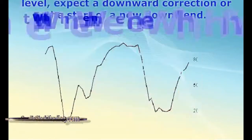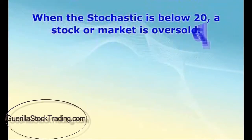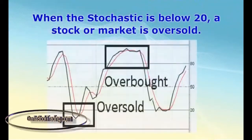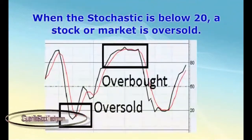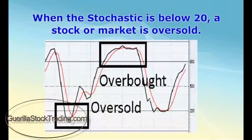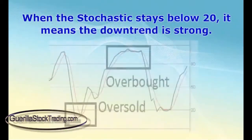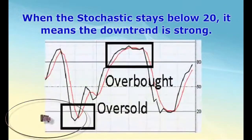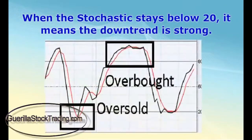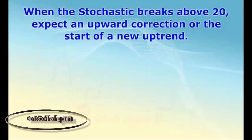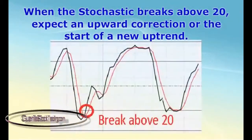When the stochastic is below 20, a stock or market is oversold. When the stochastic stays below 20, it means the downtrend is strong. When the stochastic breaks above 20, expect an upward correction or the start of a new uptrend.